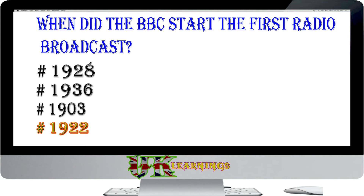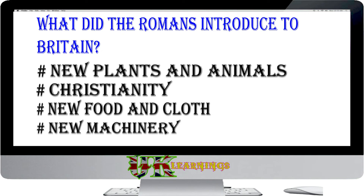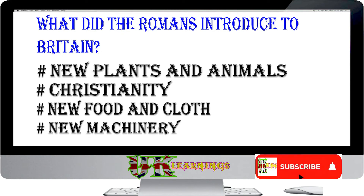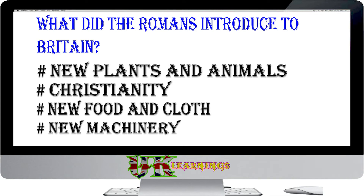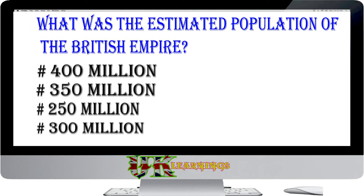What did the Romans introduce to Britain? New plants and animals, Christianity, new food and cloth, new machinery. The answer is new plants and animals. The Romans remained in Britain for 400 years. They built roads and public buildings, created a structure of law, and introduced new plants and animals.